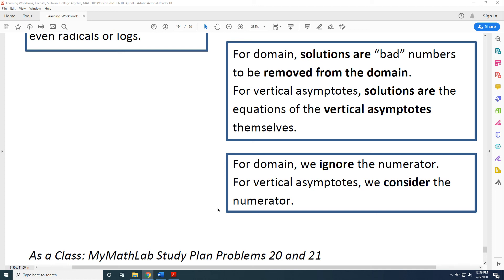And finally, a third difference. For domain, we ignore the numerator, but for vertical asymptotes we consider the numerator as part of the process.